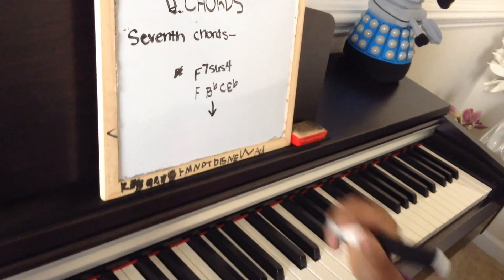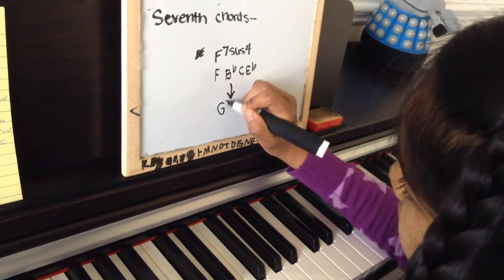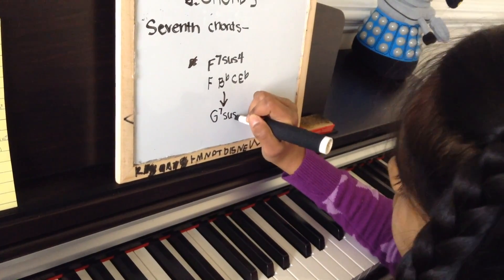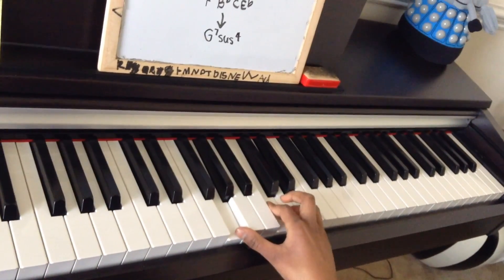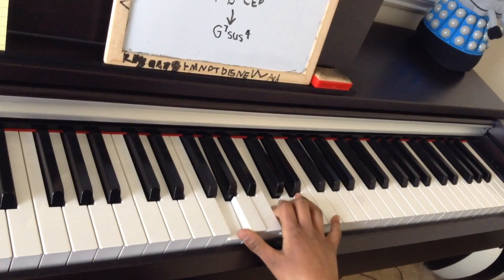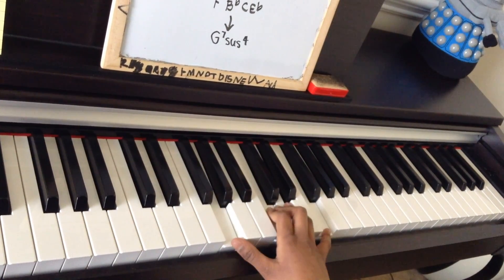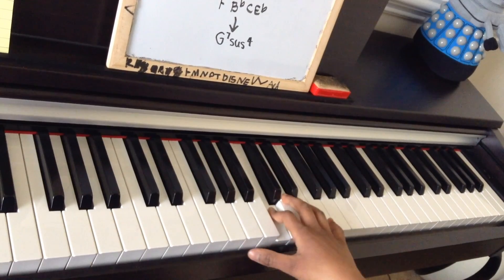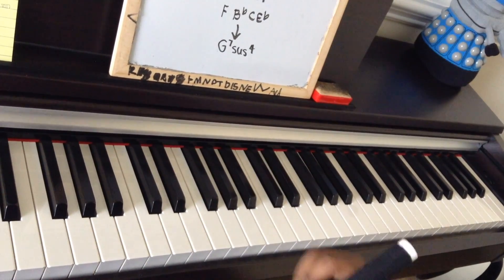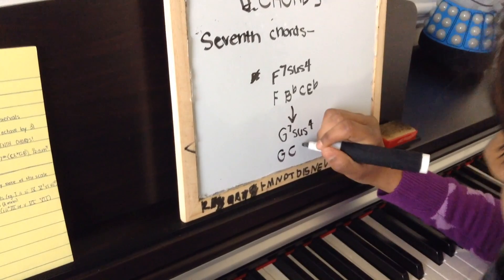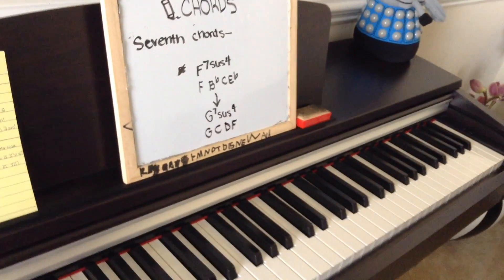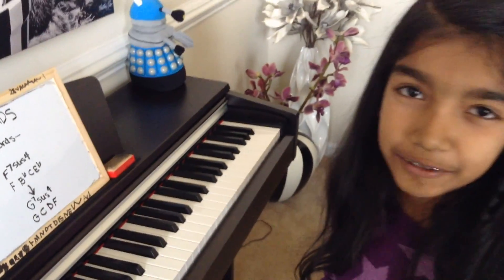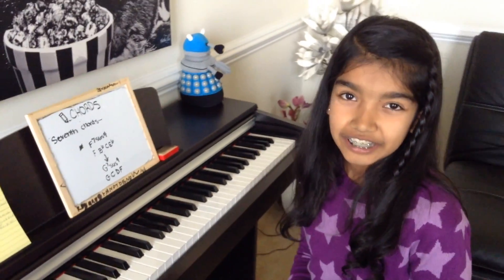Now let's try G seven sus four. You have your G suspended chord and then add on the flat seventh, giving you G, C, D, F. Now we've covered triads and seventh chords. If you have any questions about intervals, just look at my intervals video. Thanks for watching.